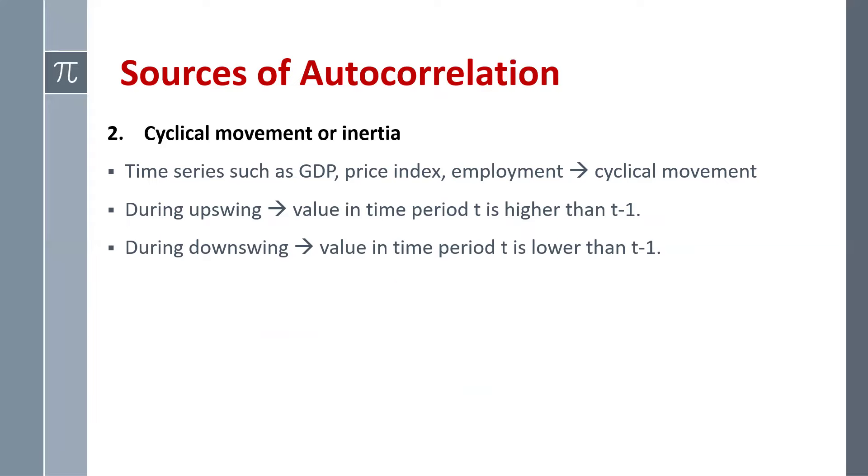So due to this cyclical movement, we have the autocorrelation problem. So here mu-t is not independent of mu-t-minus-one due to cyclical movement.